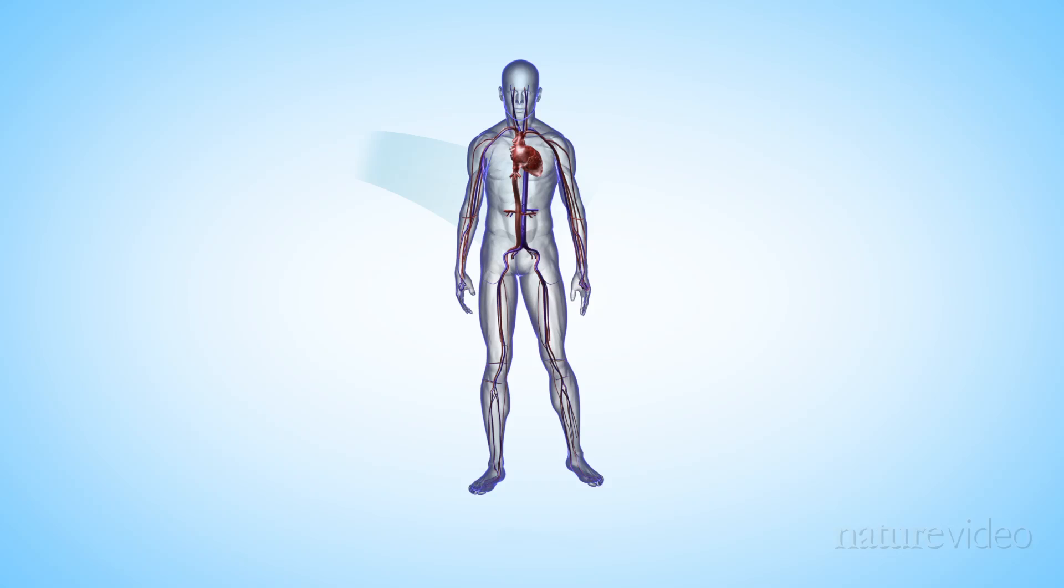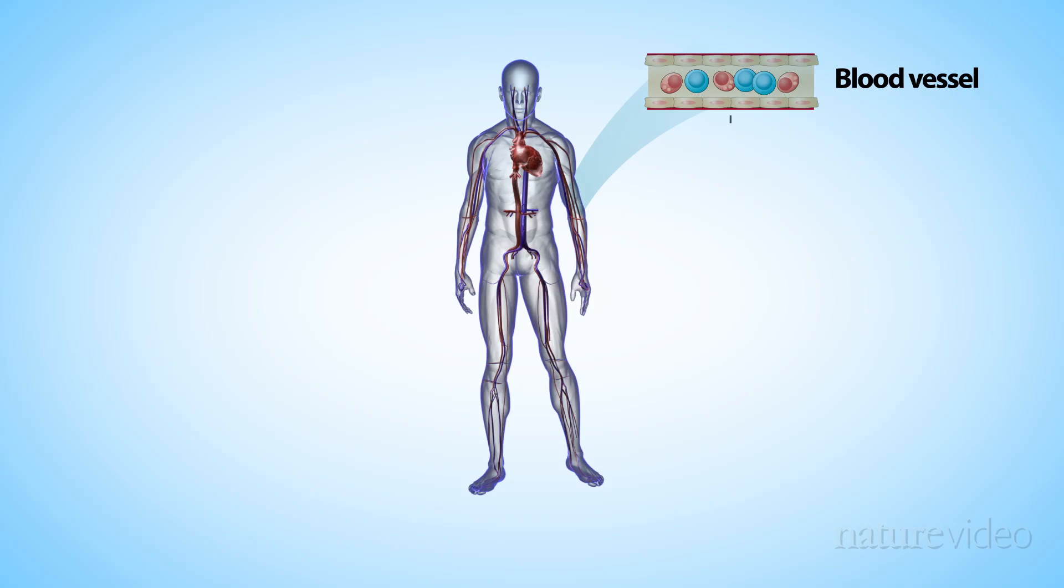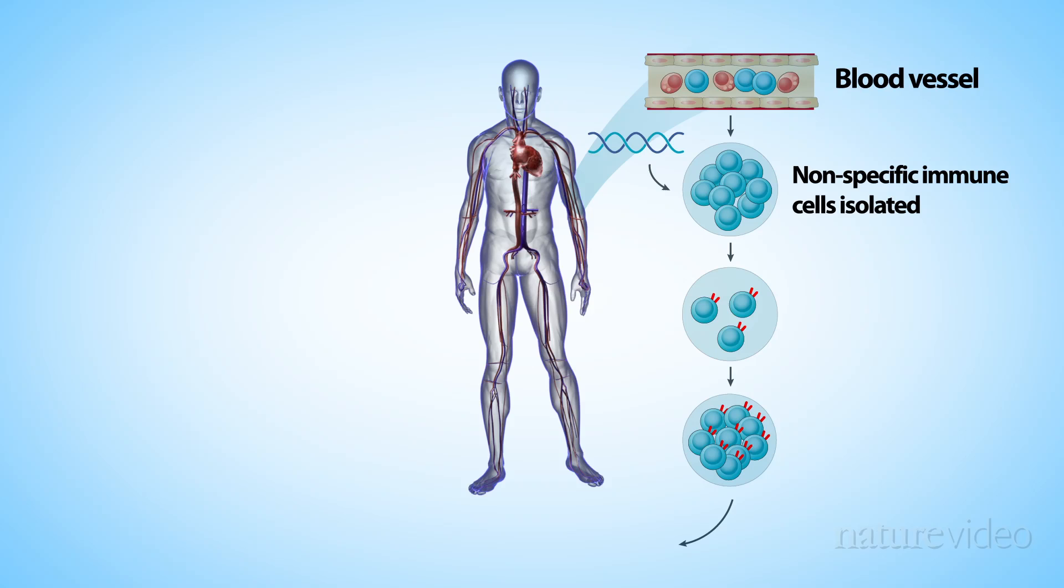One approach is to take immune cells directly from the tumor. It's difficult to extract enough cells, but the advantage is that the cells have already learned to recognize the tumor. Taking cells from the blood is much easier, but then you've got to use genetic engineering to arm them with tumor-specific receptors. Either way, the cells are activated using cytokines and then multiplied in Petri dishes before being reintroduced to the patient.